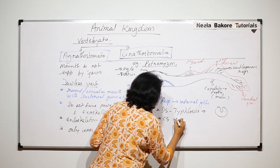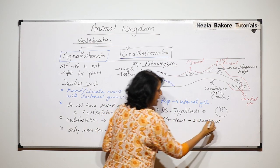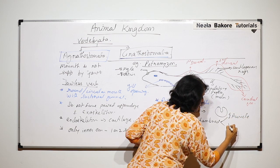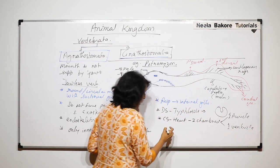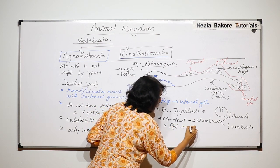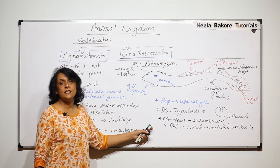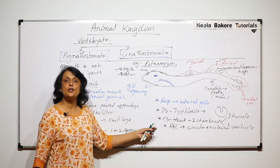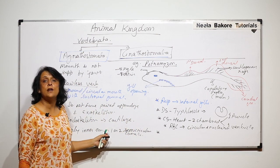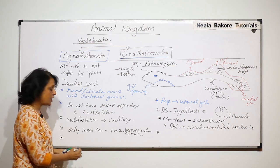Circulatory system: the heart is two-chambered. There is one auricle or atrium and one ventricle. In the circulatory system itself we will say that RBCs are circular and nucleated. So RBCs have nuclei and they are circular. We can write this as a general character that these Agnathostomes are poikilotherms.